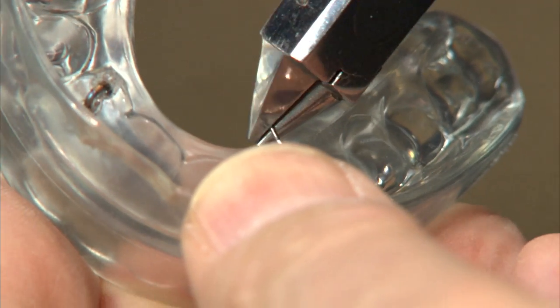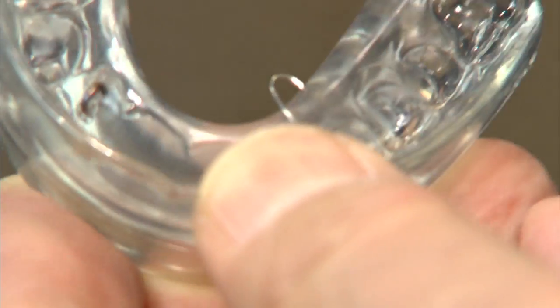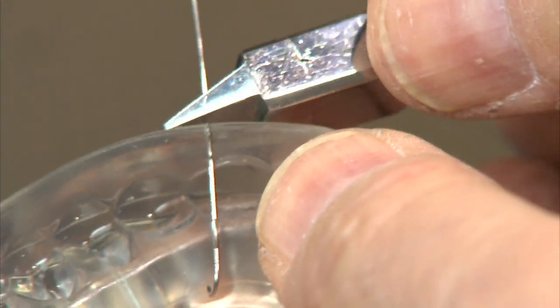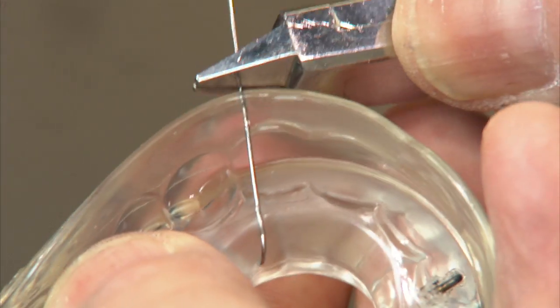Then we take and bend that wire like a little fish hook, and then we pull that wire into the appliance.